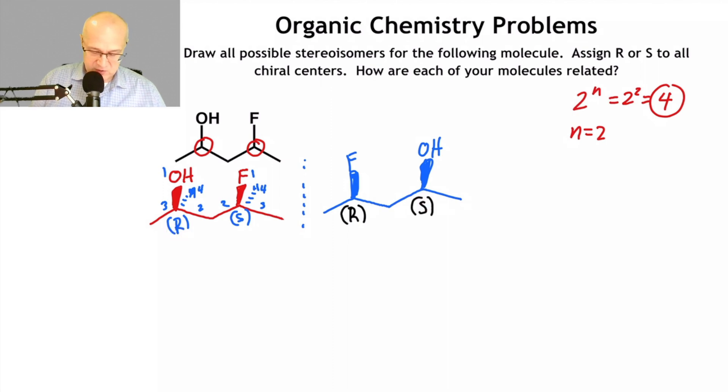There we go. This must be R and this must be S. It's the opposite of what it was before. So the carbon bearing the oxygen was R. Now the carbon bearing the oxygen is S in the enantiomer. This is always true. If you're an enantiomer, you are a non-superimposable mirror image.